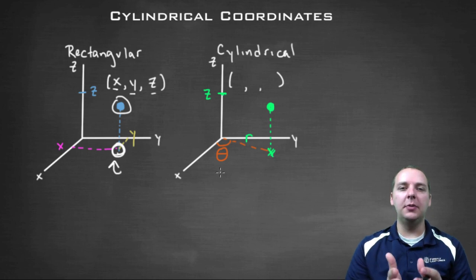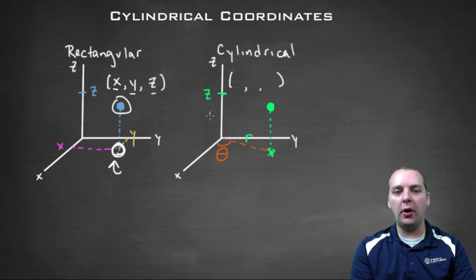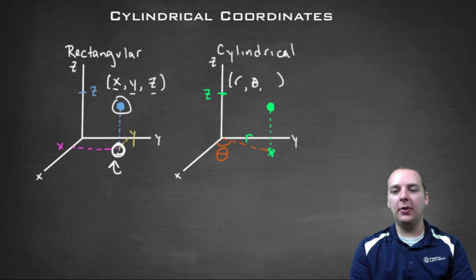This is very similar to like a three-dimensional version of polar form, kind of. The x and the y convert to an r and a theta. And the cool thing about, or the nice thing about cylindrical coordinates, is the z value that we used in rectangular form is going to be the same thing in cylindrical form, which is really nice.